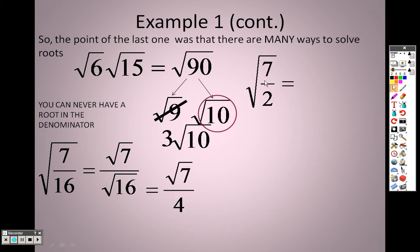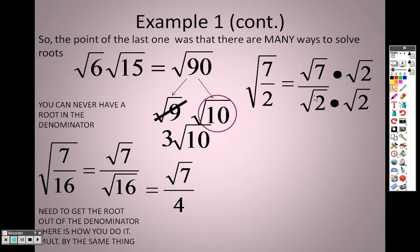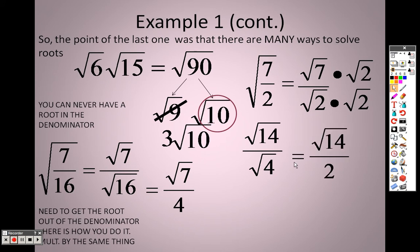If we split it up as root 7 over root 2, that's fine, but we never want a root on the bottom. It's actually pretty simple to get rid of it — since it's a root 2 on the bottom, you multiply both the top and bottom by root 2. Root 2 times root 2 is root 4, and root 4 is 2. So really it's square root of 14 over 2, because 7 times 2 is 14. So root 14 over 2 is your answer.